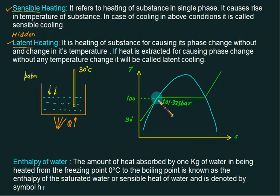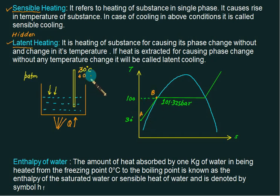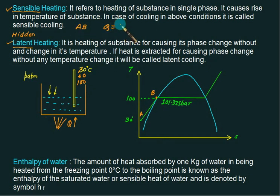When we give heat to this subcooled water, the heat is used to change the temperature of the water — it is detected by the thermometer. Hence this is called sensible heat. The temperature will rise, and finally steam formation begins. The region A to B on the plot is called sensible heating.